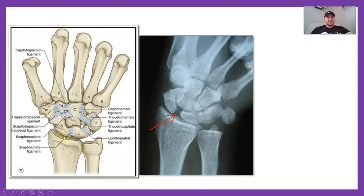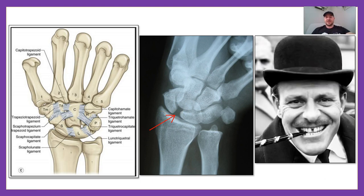Looking at the carpal ligaments, here's the scaphoid and the lunate — the scapholunate ligament is most in question, though carpal instability can occur between any of these ligaments. On X-ray, if that ligament is torn, the relationship between these bones diverges and you get an empty space. This is known as the Terry-Thomas sign — the gap between the scaphoid and lunate looks similar to the gap-toothed appearance of the entertainer.